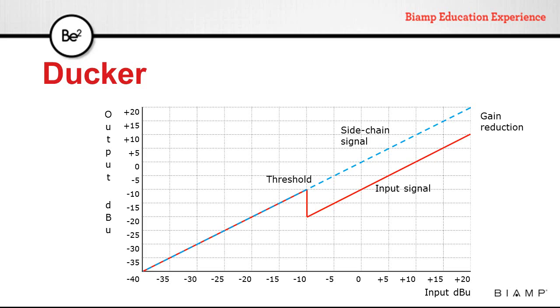Any signal passing through the docker will be unaffected as long as the sidechain signal is below the threshold. Once the sidechain signal goes above the threshold, that input signal will be reduced by a fixed amount.